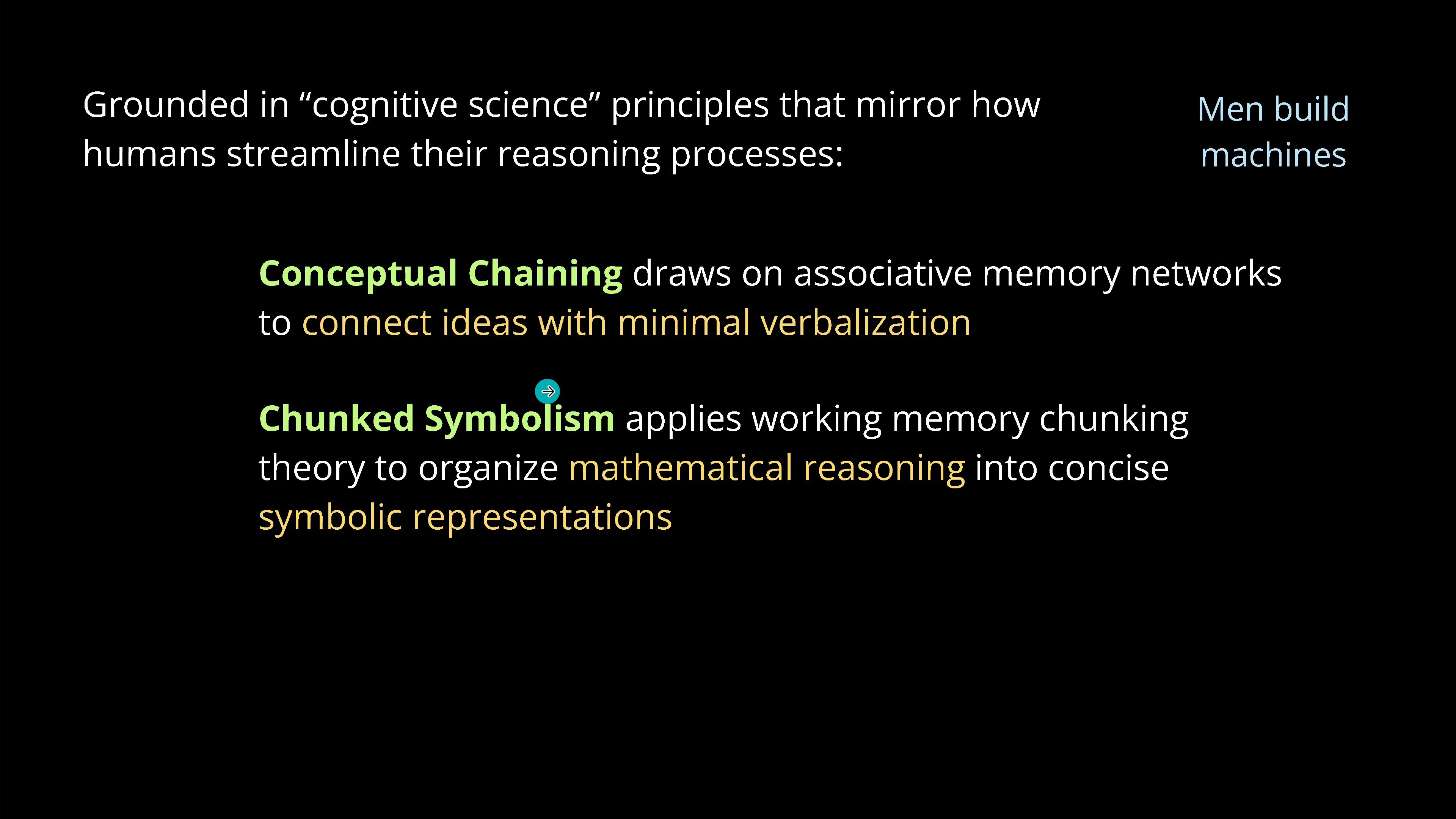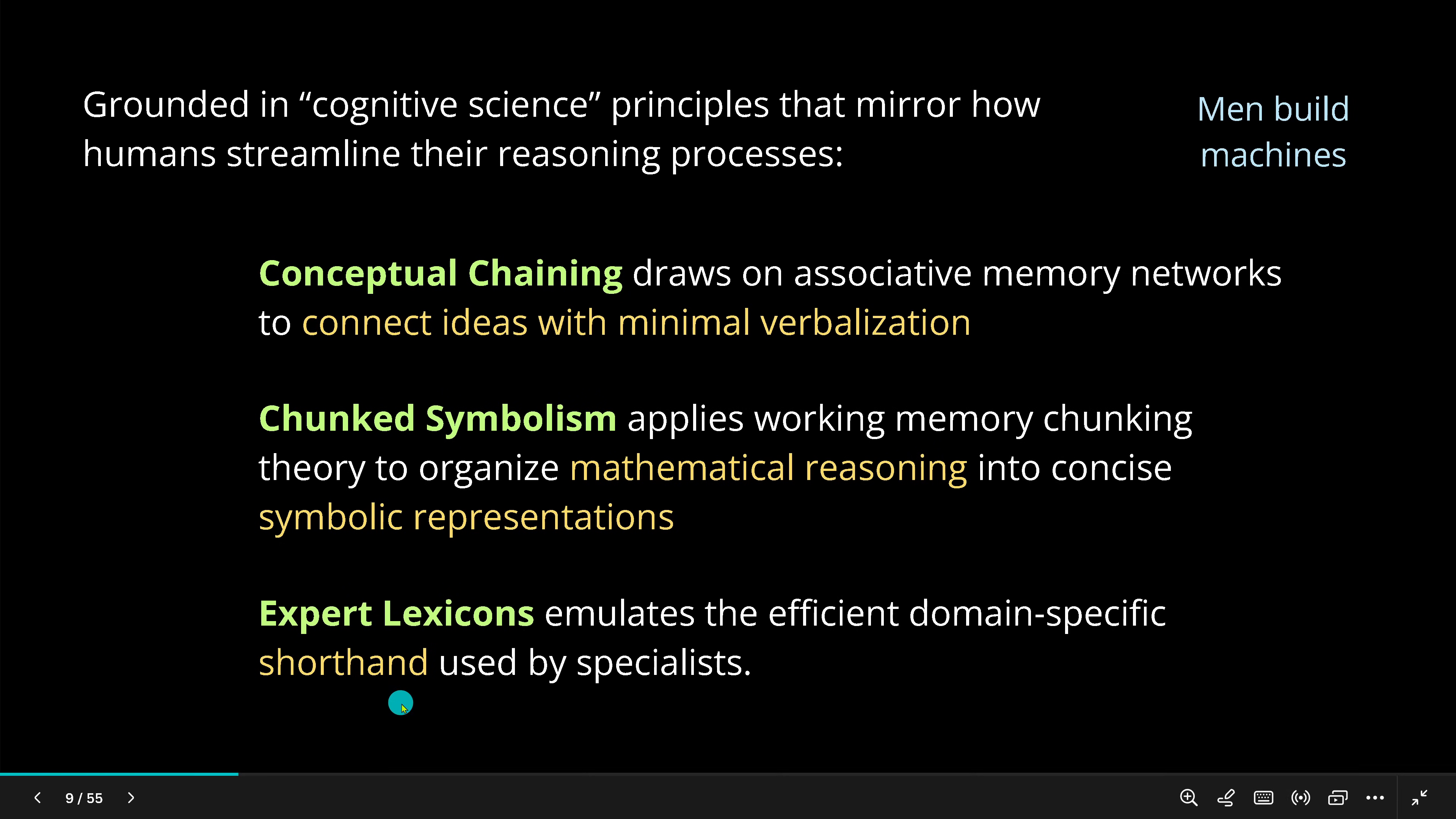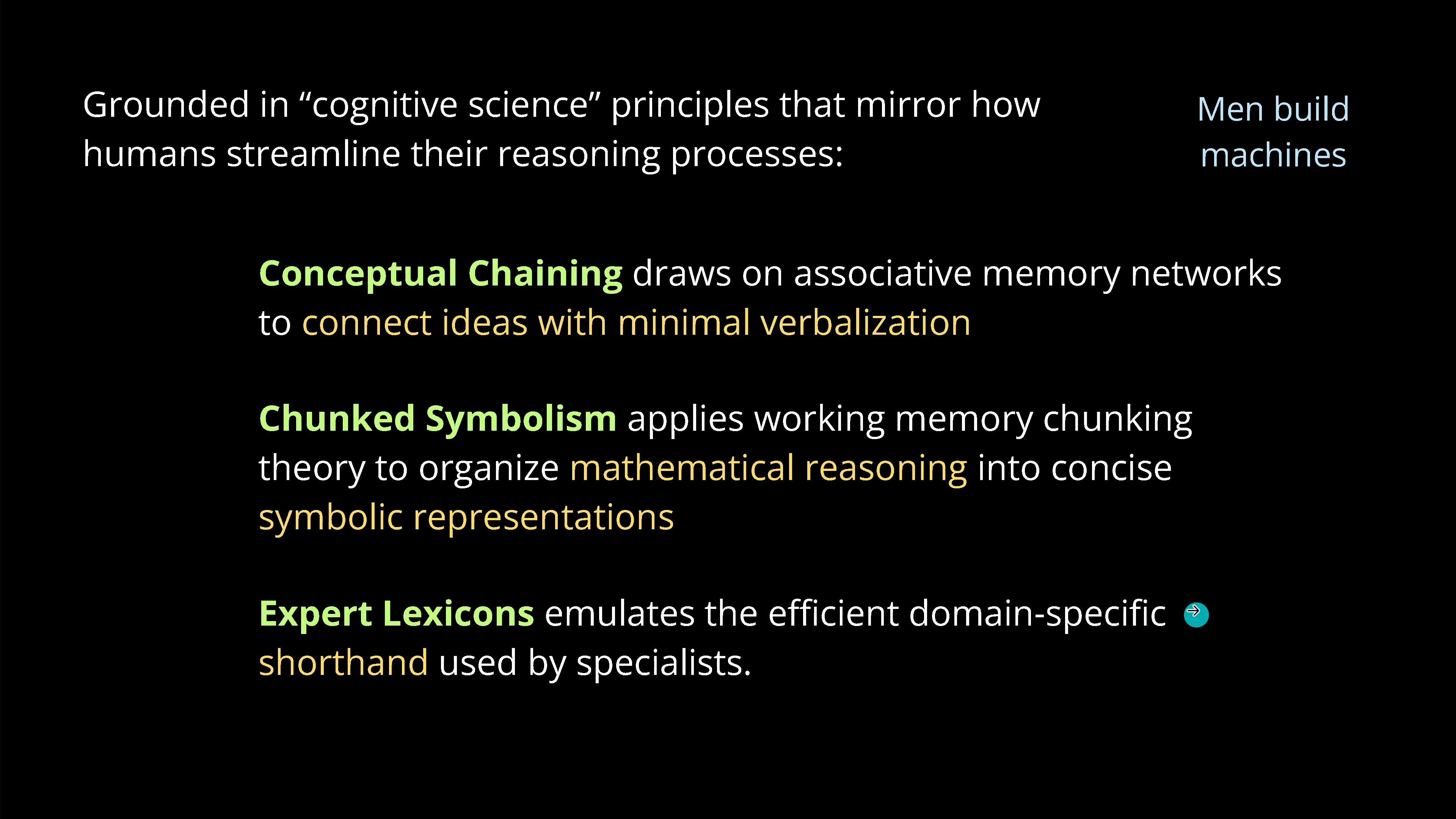And the first one they say is conceptual chaining. So this draws on our associative memory networks to connect our ideas with minimal verbalization. I will give you an example in a second. The second they called chunked symbolism. This is easy. We know this. We have mathematical reasoning applied to our normal natural language, and we have mathematical logic notation that we can write down symbolic representations. This is beautiful. And then if you went to your medical doctors, experts. Experts have a particular shorthand. If you get some instruction or some transfer to another hospital, they don't write down complete beautiful essays with long sentences, but they have some keywords in a particular sequence.